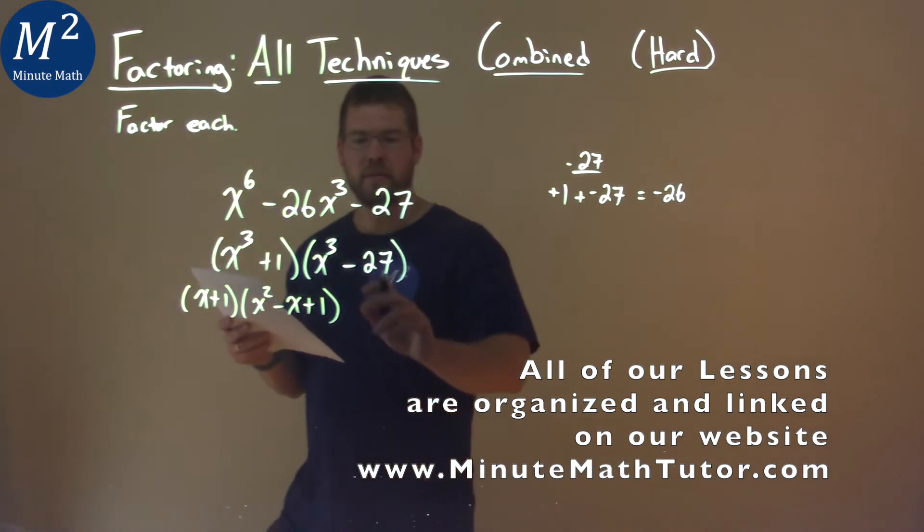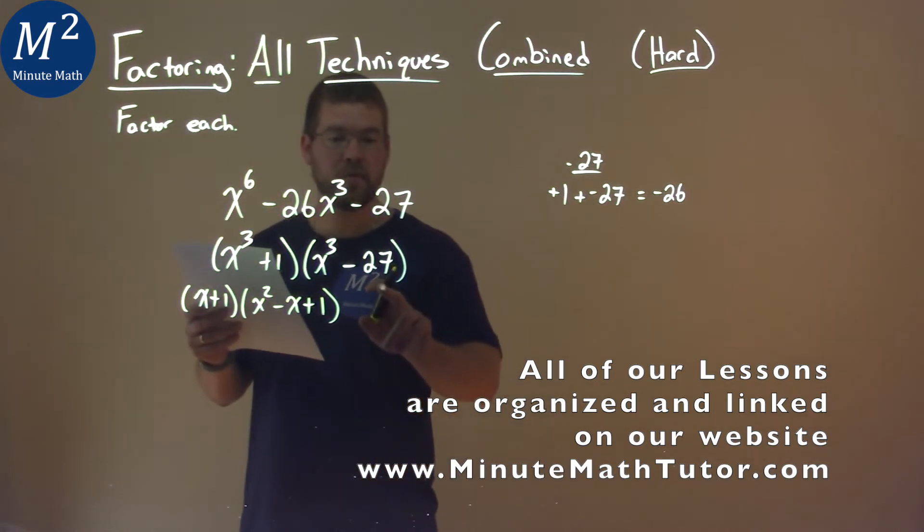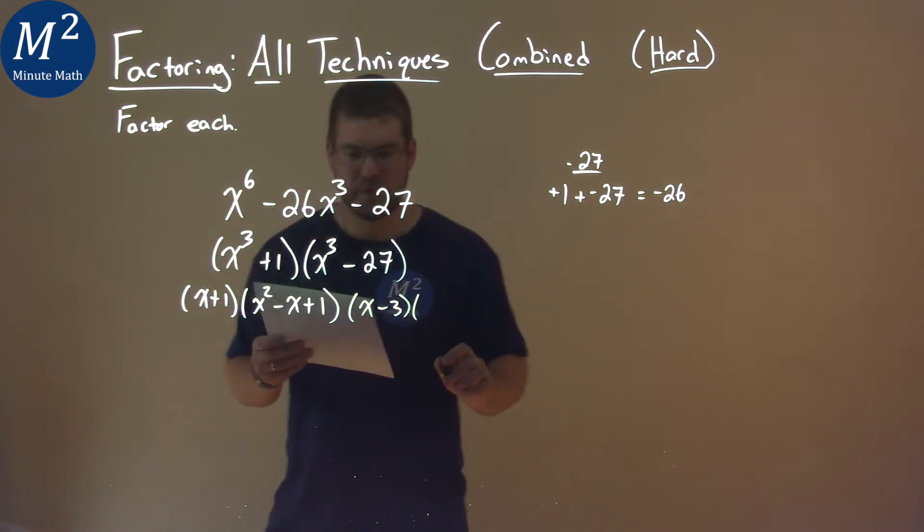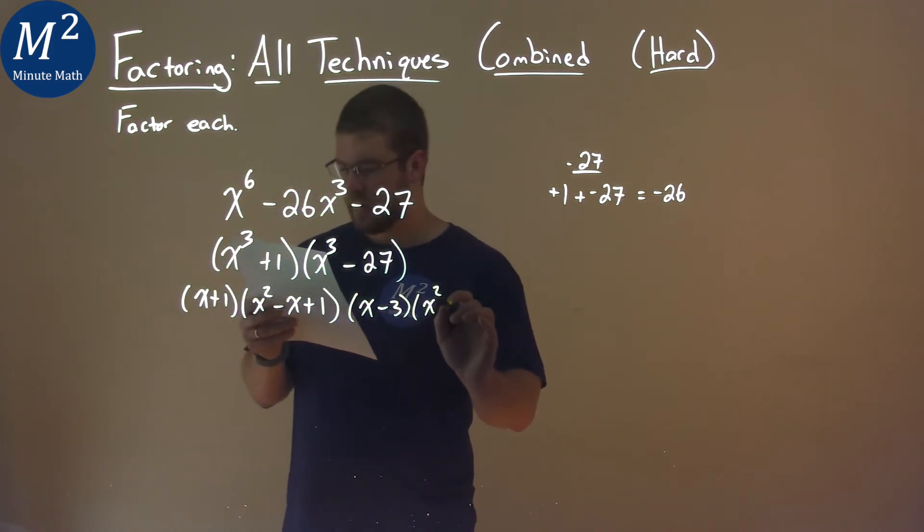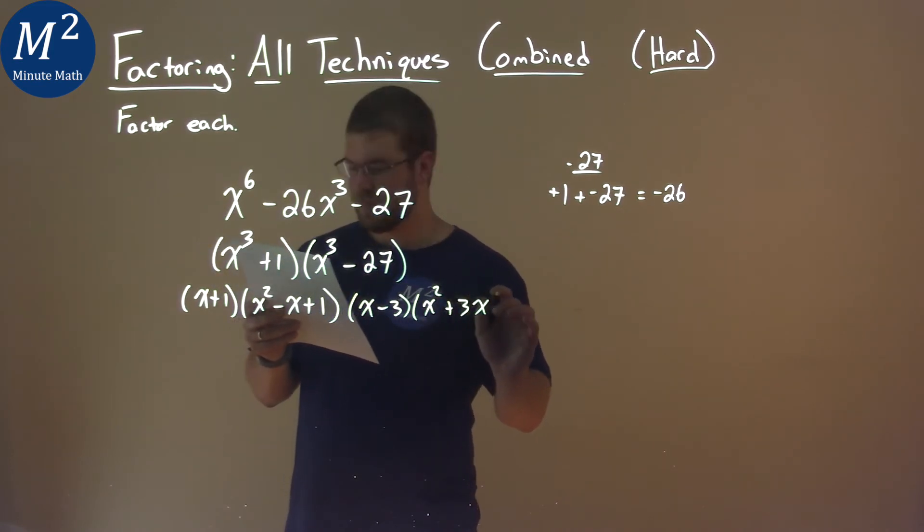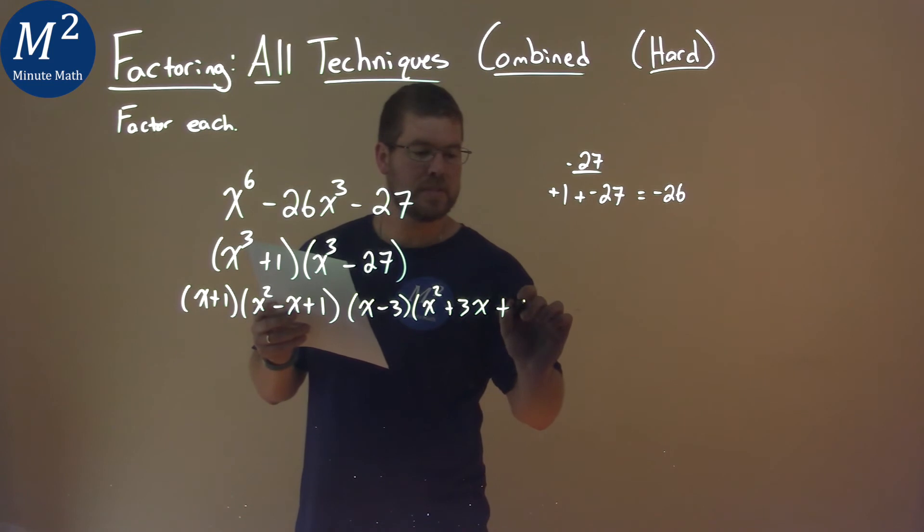We can do the same thing with the second part. Each one's a cube, right? 27 is 3 cubed. So using the difference of cubes formula: x minus 3 times x squared plus 3 times x, so 3x, and then plus 3 squared, which is 9.